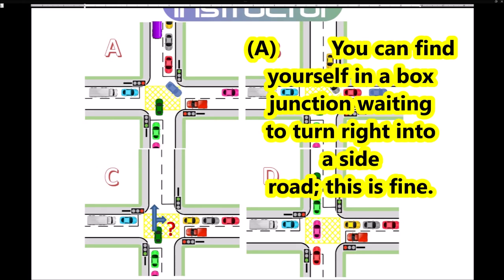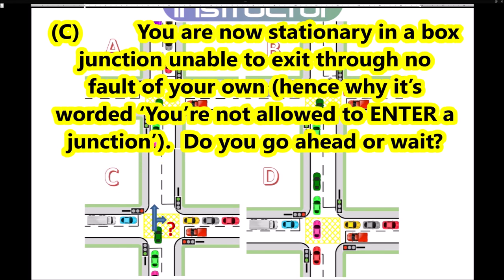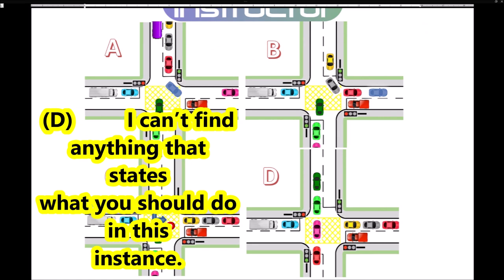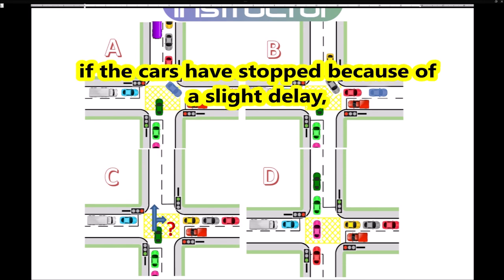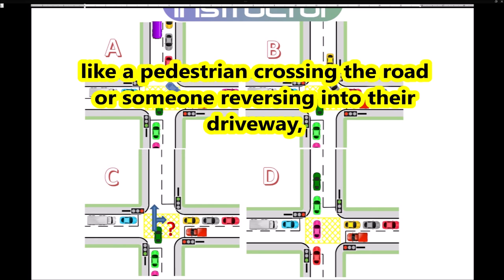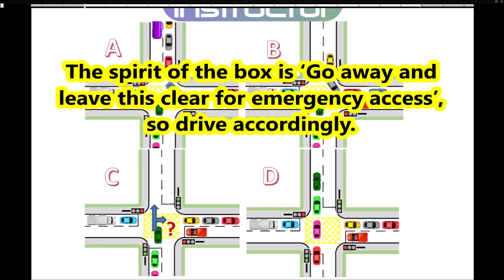Note: you can find yourself in a box junction waiting to turn right into a side road — this is fine. But if oncoming traffic turns left into your intended road and stops, you are now stationary in a box junction unable to exit through no fault of your own. Hence why the rule is worded as you're not allowed to enter a junction if your exit isn't clear. If the cars have stopped due to a slight delay — like a pedestrian crossing or someone reversing into a driveway — wait and go when clear. If the delay is likely to be longer, like road works, find an alternative route. The spirit of the box is: go away and leave this clear for emergency access. Drive accordingly.